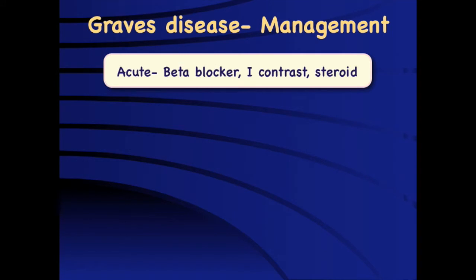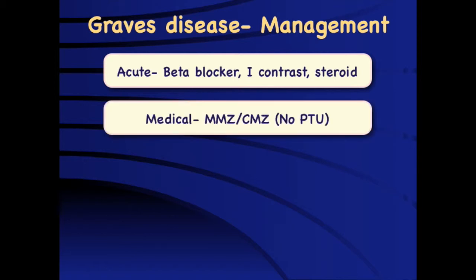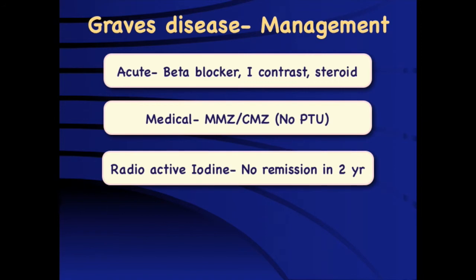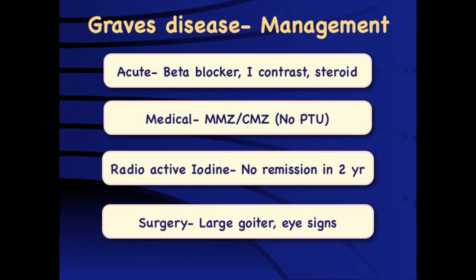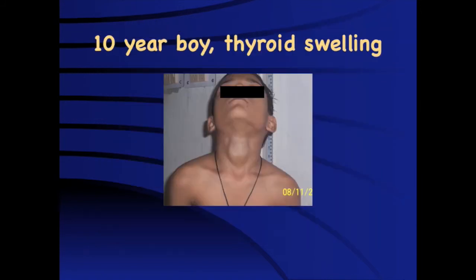Management of Graves disease depends on the clinical situation. In an acute crisis, beta blockers help improve sympathetic symptoms such as tremors and tachycardia. In severe thyrotoxic storm, iodinated contrast and steroids are efficacious. Medical management includes antithyroid drugs — methimazole or carbimazole — but propylthiouracil is banned in children due to hepatotoxicity risk. Radioactive iodine is approved as a second-line option. Surgery should be considered for children with large goiter and eye signs if remission is not achieved over two years.